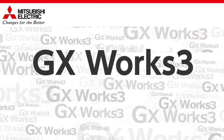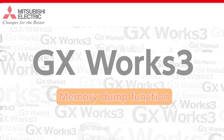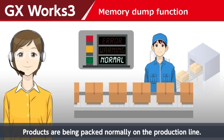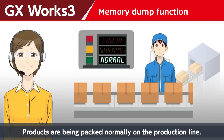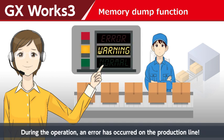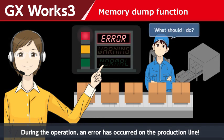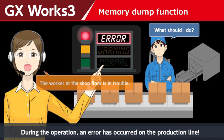GX Work3 Memory Dump Function. Products are being packed normally on the production line. During the operation, an error has occurred on the production line, and the worker at the shop floor is in trouble.